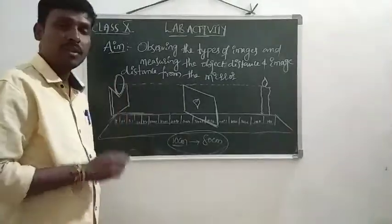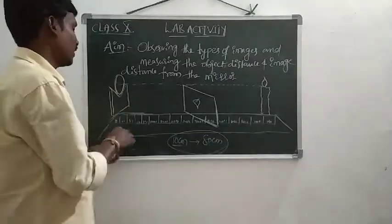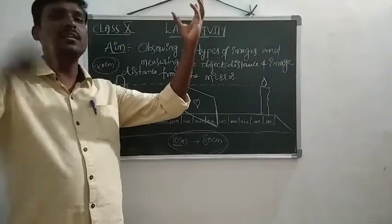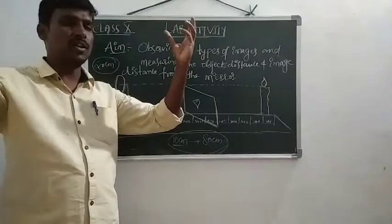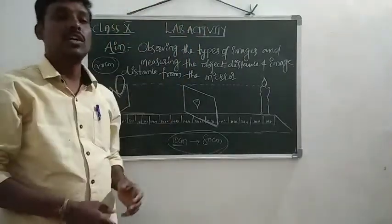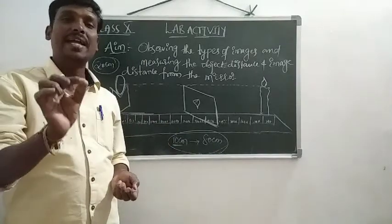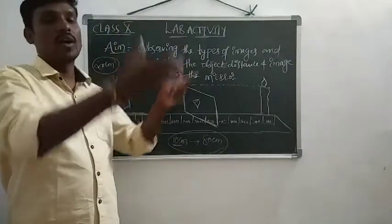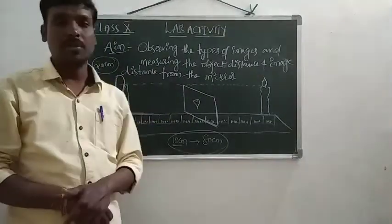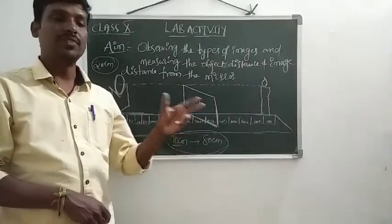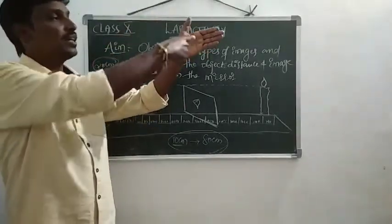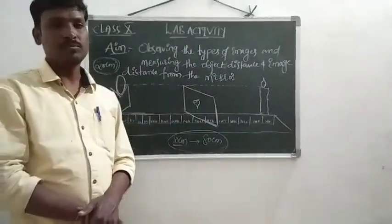Since we are using a concave mirror of known focal length, we can adjust positions accordingly. To find the focal length by a rough method: hold the concave mirror so that sunlight falls on it, then hold paper in front of the mirror until the reflected rays meet at one point — the brightest spot. The distance from the mirror to that spot is the focal length of the concave mirror.